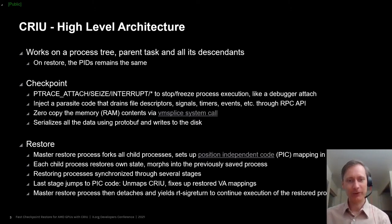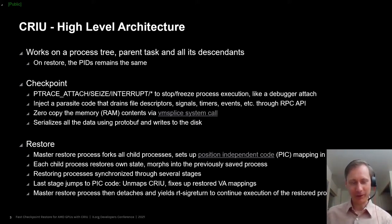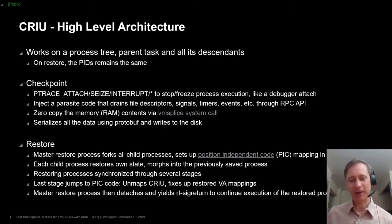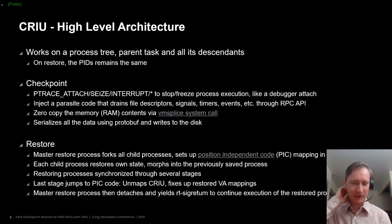The restoring of those several processes is synchronized through several stages. In one of the last stages, each of those mostly-restored CRIU processes jumps to the PIC code. That PIC code is at a virtual address location where it does not conflict with any of the original virtual address mappings of the checkpointed process, so that code can restore the original virtual address mappings and basically remap all the VMAs to their original locations without overriding itself. The last thing it does is unmap itself and return control back to the restored process through an RT sigreturn mechanism.